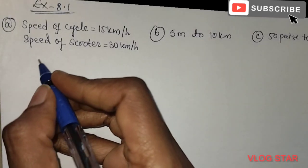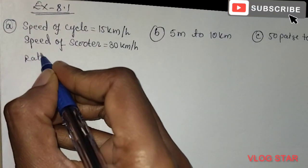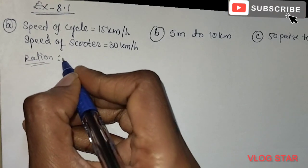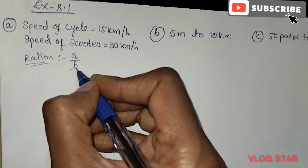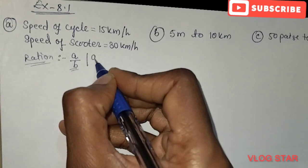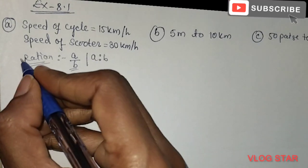Ratio is denoted by, if there are two numbers A and B, we denote it as A by B. This is the ratio form, or we denote it as A is to B.